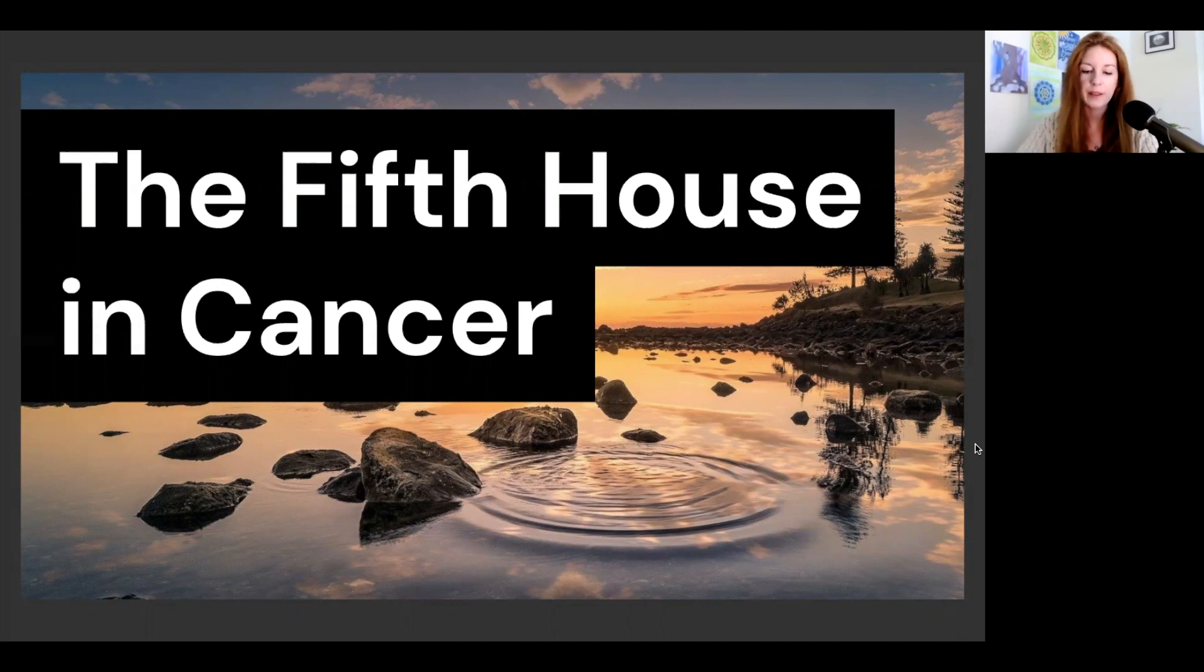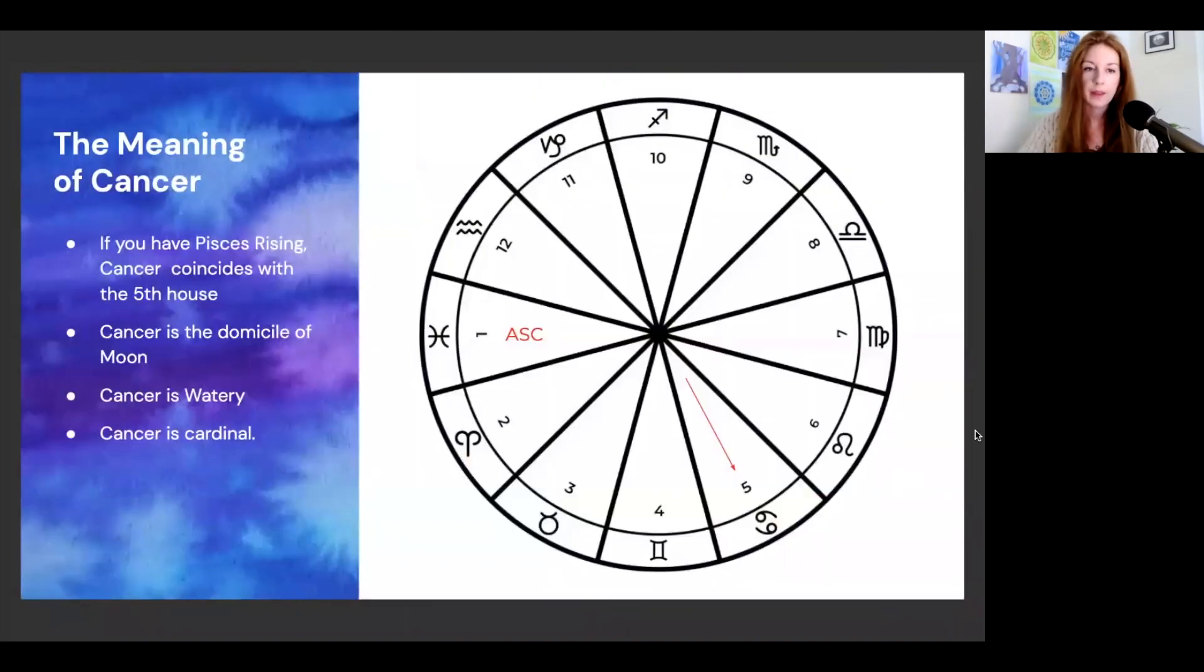We're going to be looking at the fifth house in Cancer. If you have this placement based on whole sign houses, you will have Pisces rising, and so Cancer is coinciding with the fifth house which you can see here. Cancer is the domicile of the moon, this is the temple of the moon, so we'll be looking at the moon today going through all of the signs.